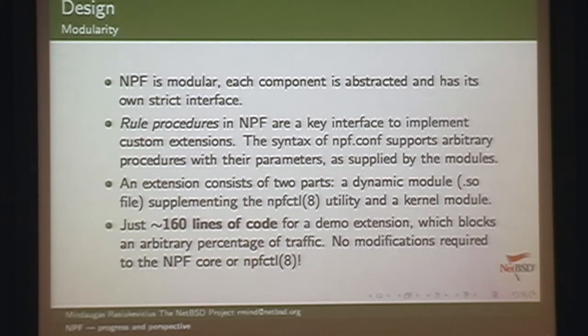Can you have multiple rule procedures per rule? Yes. When you create a rule, you create a rule procedure associated with it, and within that procedure you specify all the extensions you want to invoke — passing parameters in key-value pairs. You can invoke as many extensions as you want. It's a bit double-tracked, but the point is you can associate as many extension operations as you want with a single rule.